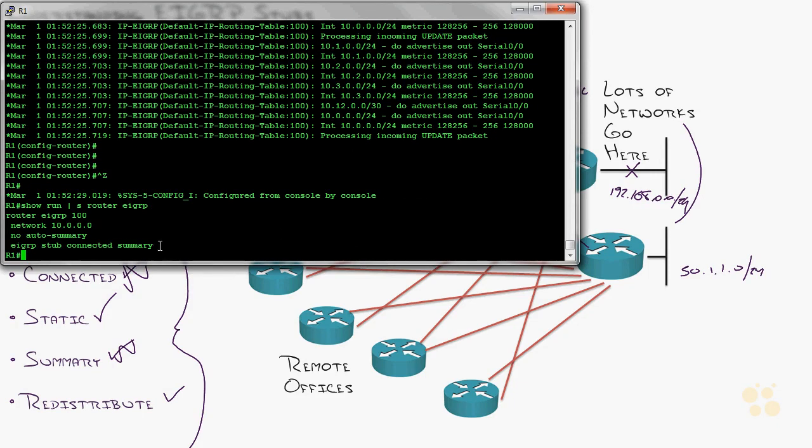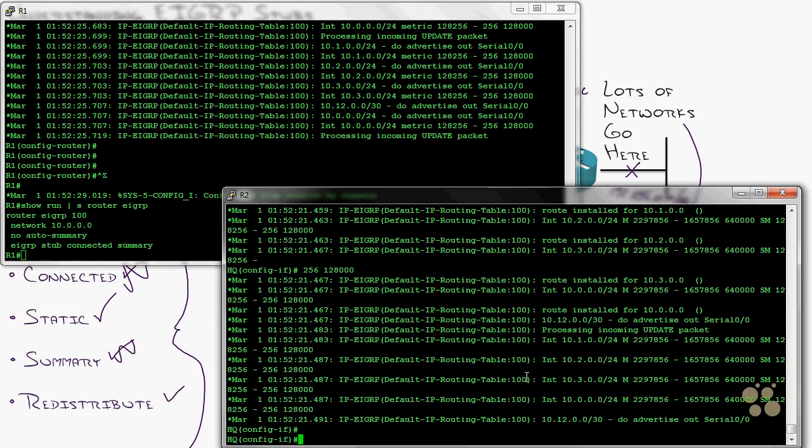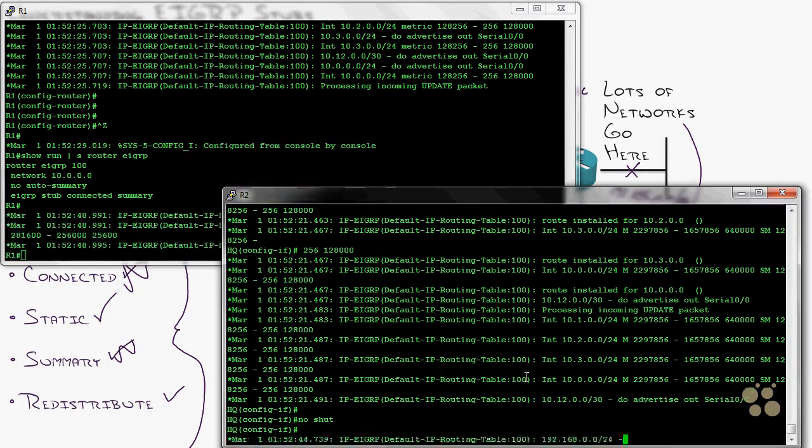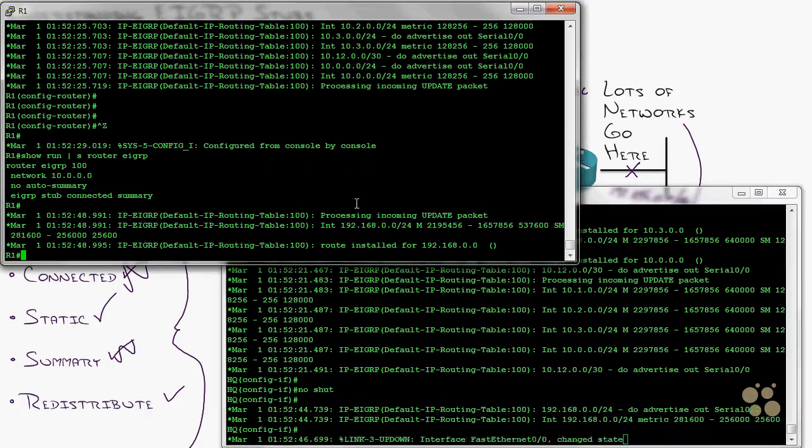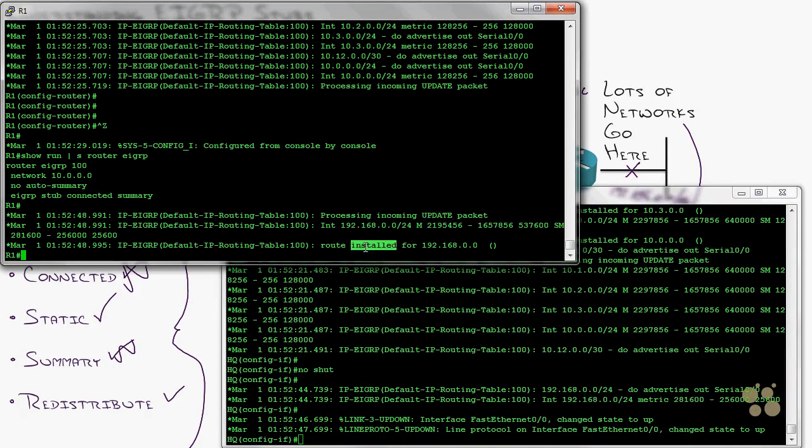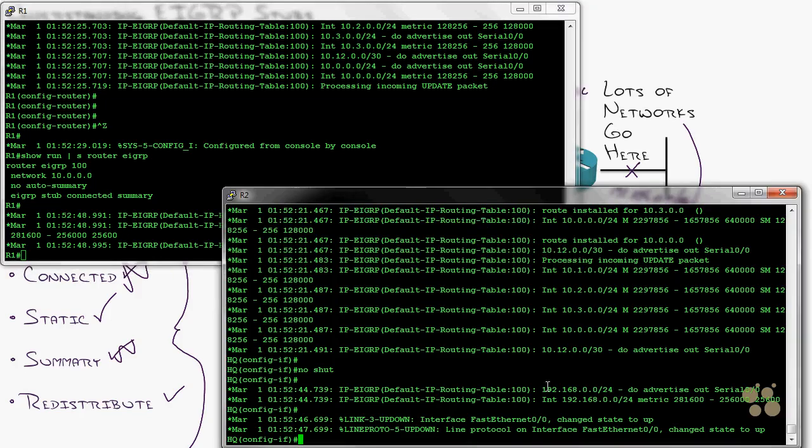Now watch what happens. I'm going to come over to router one or actually I should say the headquarter router. I should have powered this back on. So a no shut. So life is good. We've received the network again. I can see, I got an update. I'm adding that to my routing table. Now watch what happens when I shut it down. I'll do a shutdown and I'm expecting that router one will not receive the query message because it recognizes that as a stub.